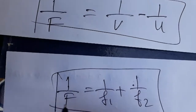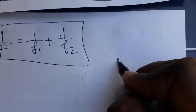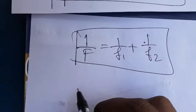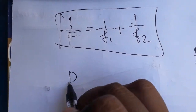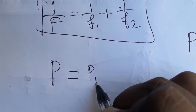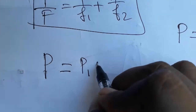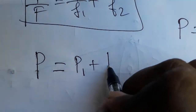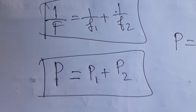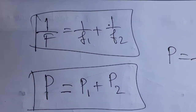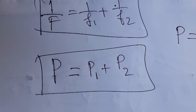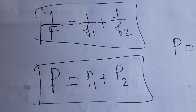For the combined power: power P = 1/f. So the combined power is P = P1 + P2, where P1 = 1/f1 is the power of lens 1 and P2 = 1/f2 is the power of lens 2. Today in this video we learned what is the combined focal length and combined power. Thank you.